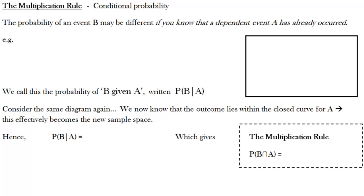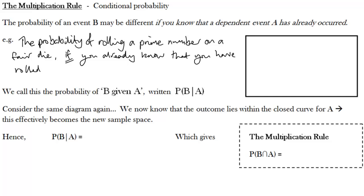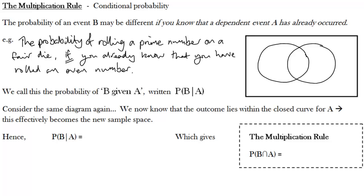Now we come to the second of our rules — the multiplication rule. Very important, it deals with conditional probability. This is when you know something about the outcome of an event, and that changes the probabilities of what will actually have happened. For example, if I know that I've rolled an even number on my dice, that changes the probability of me having rolled a prime, because it's narrowed down the possibilities. We have a mathematical rule for that, which we're going to look at now.